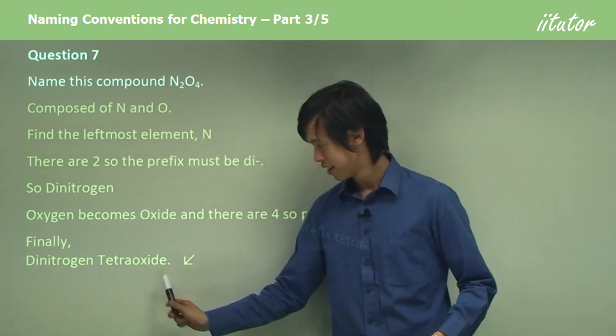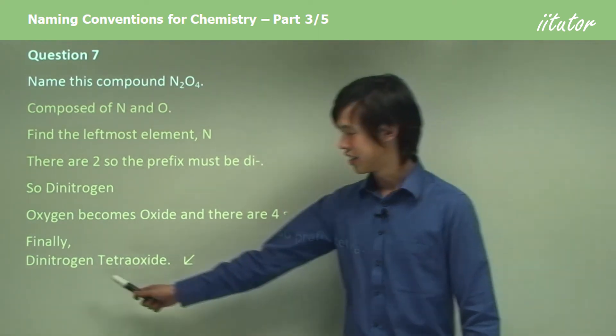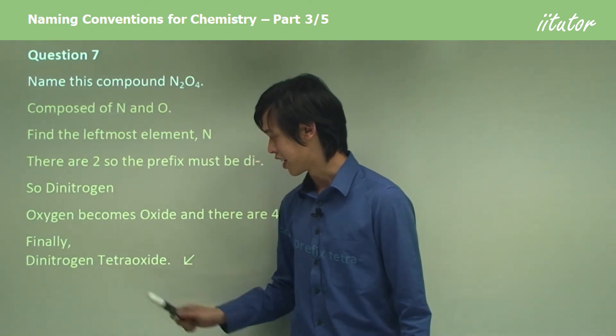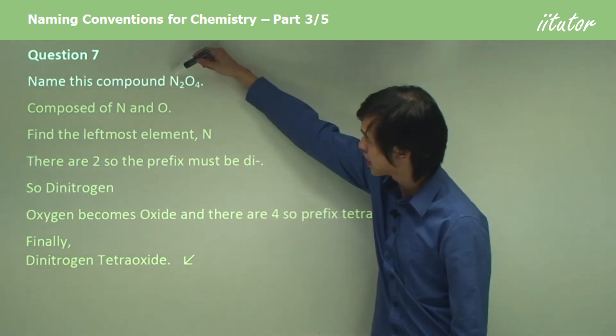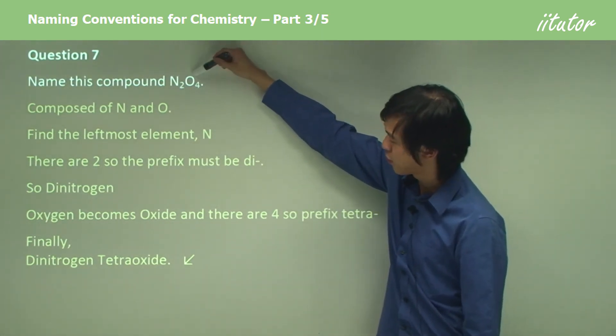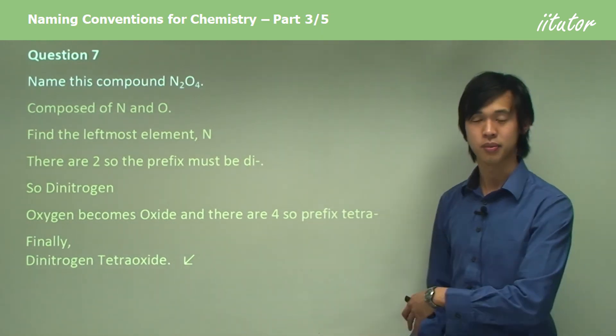Okay, so we've got tetra oxide here. And if we put them together, you've got di-nitrogen tetra oxide. Okay? And so, di-nitrogen, there's two. Tetra, there's four. And you can see where the rest comes from. Okay.